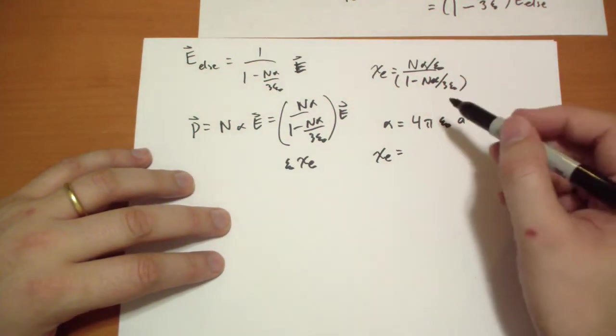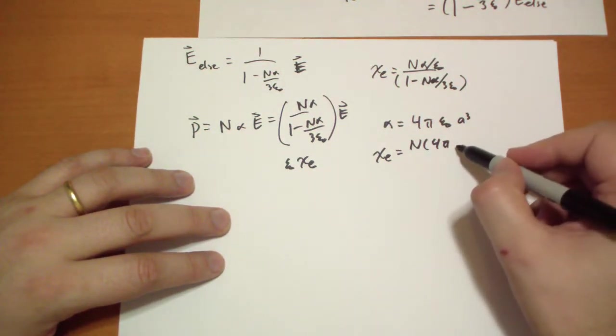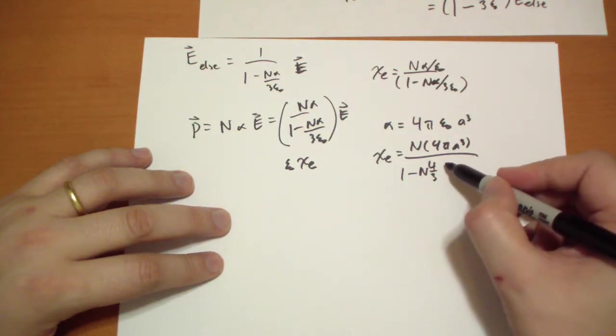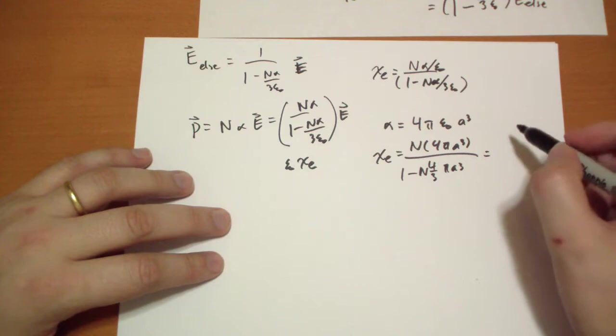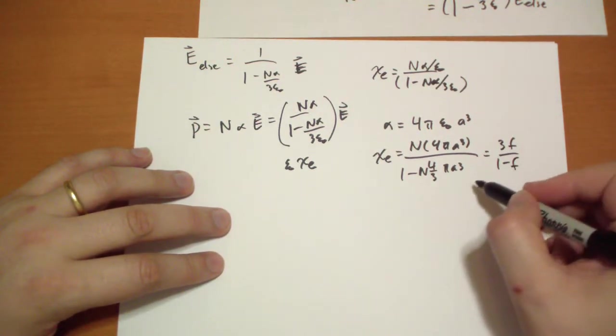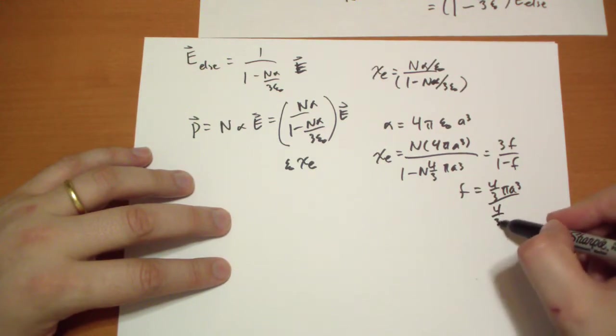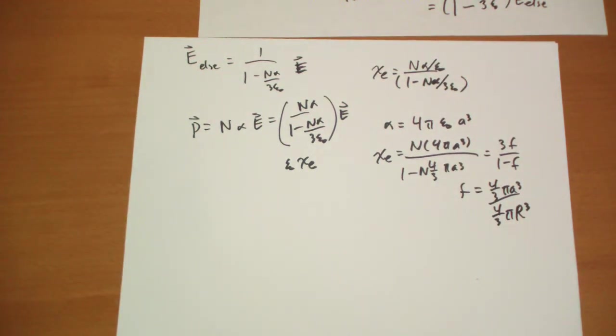And so we get a chi-e of N times 4 pi a-cubed all over 1 minus 4 thirds N times 4 thirds pi a-cubed. Which you can rewrite using F, where F equals 4 thirds pi a-cubed over 4 thirds pi R-cubed, which is the fraction of the total volume allocated to each atom that this primitive atom actually takes.